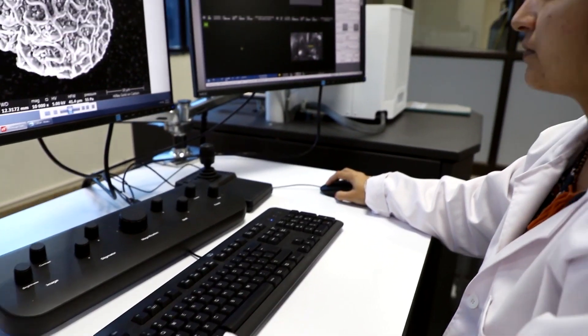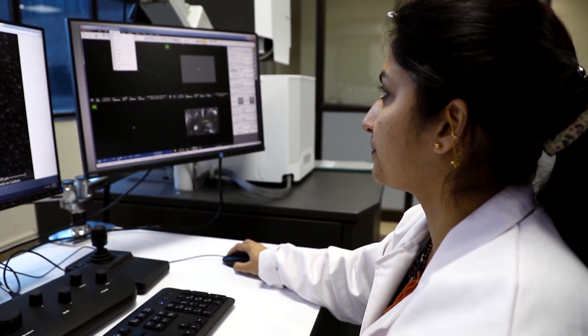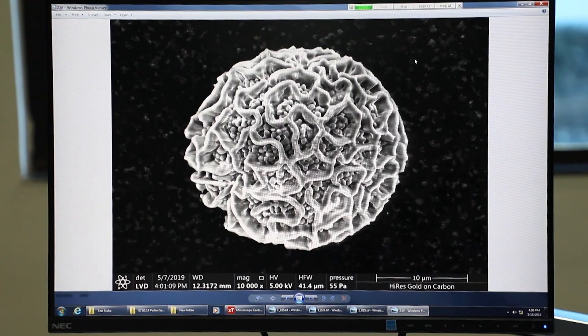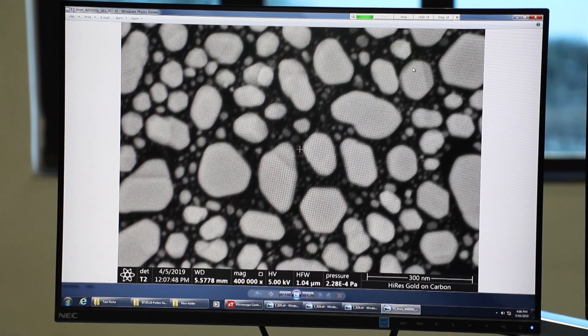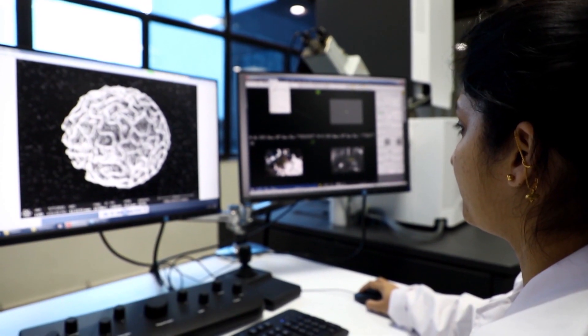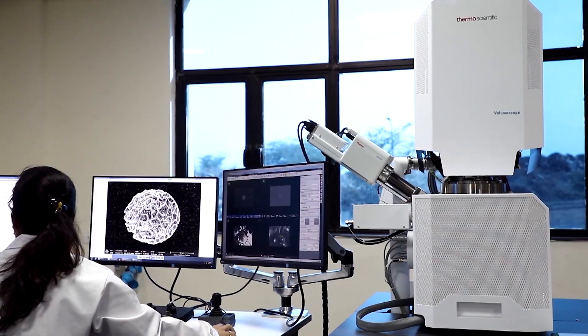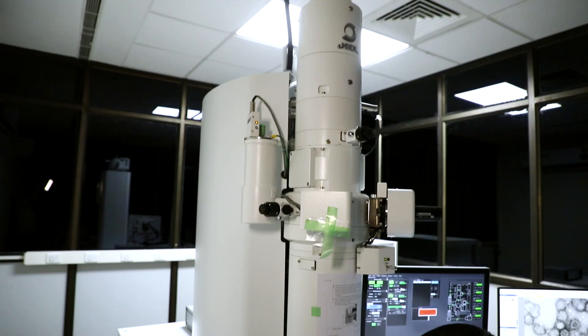This facility is useful in visualizing cellular and subcellular structures, proteins, stained and unstained samples, 3D architectures of cells and tissues. All this is done with the help of Volume Scope Scanning Electron Microscope and Transmission Electron Microscope.